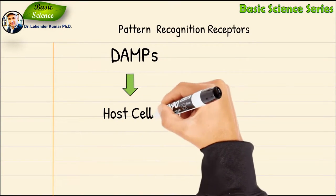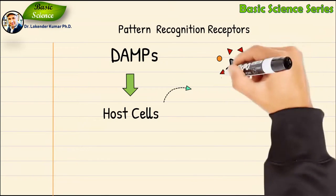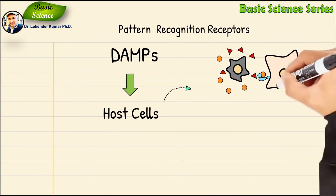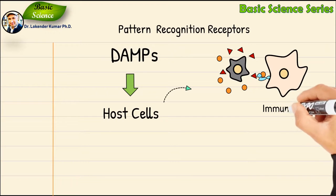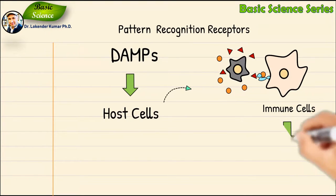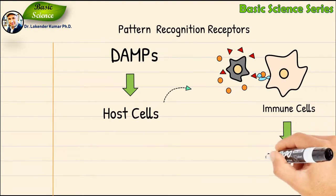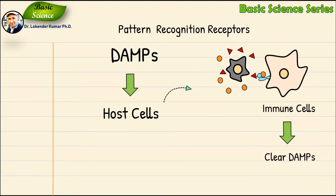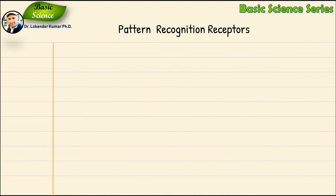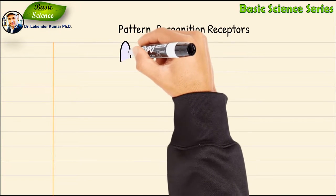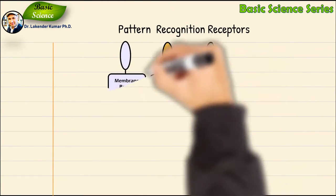DAMPs are associated with components of host cells that are released during cell damage. Because a non-functional cell part is also harmful, the immune system also detects these DAMPs and clears them from our body.